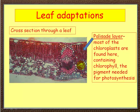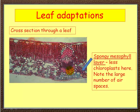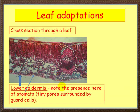Less light gets through to the next layer, which we call the spongy mesophyll layer. The spongy mesophyll layer has fewer chloroplasts because less light gets through, but what it does have are these air spaces — a large number of air spaces. Beneath that you've got the lower epidermis and here you can see a stoma — these are tiny little holes or pores with guard cells on either side that let gases in and out and also allow water movement.